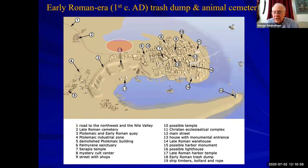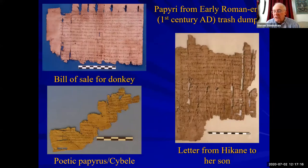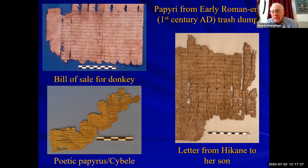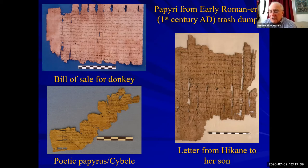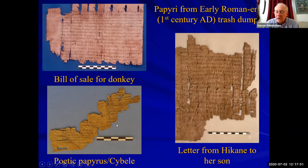One of the most exciting places to excavate is a trash dump, at least in Egypt, because the preservation is so good due to the dry climate. We've had a lot of interesting finds from our early Roman, that is first century AD, trash dump, including the discovery of an animal cemetery. The trash dumps are excellent places to find written documents such as papyri. Here you have a selection: a bill of sale for a donkey, a letter from a mother named Hekane to her son complaining that he hasn't written recently — this could have been written any time in history — and a poetic papyrus dedicated to the goddess Sibylle.